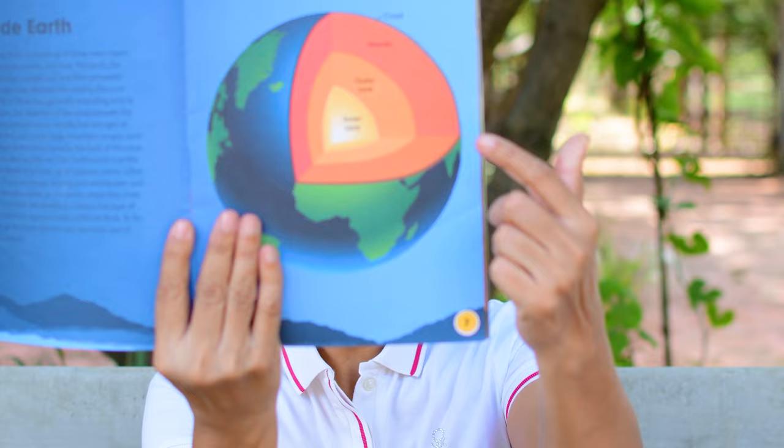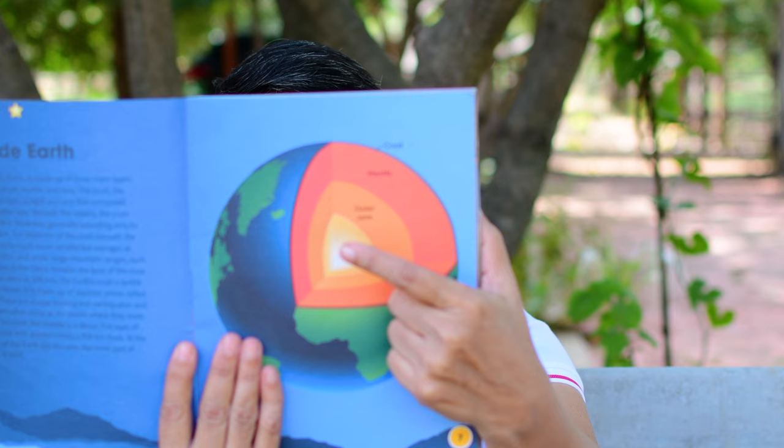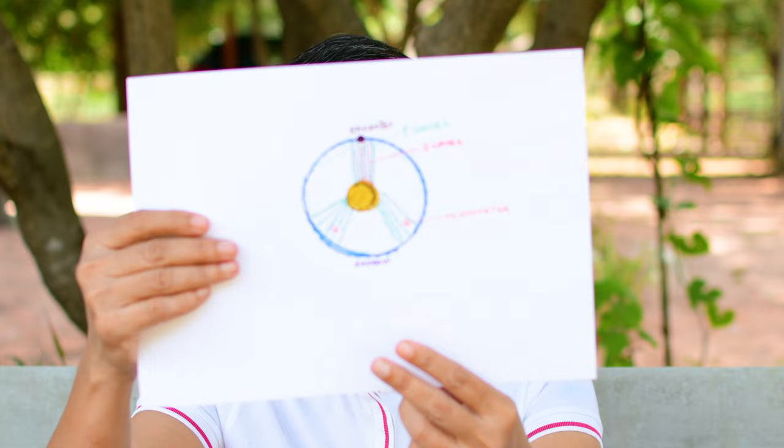She studied the data of Oldham again and thought that his solution was too simple. So she started analyzing the data again and she was the one who proposed that the core of the Earth had an outer liquid zone and an inner solid zone. She studied the P waves and the S waves in a 1929 New Zealand earthquake.